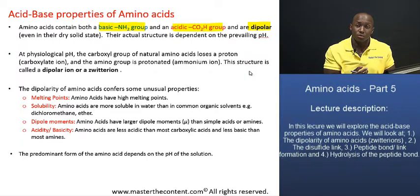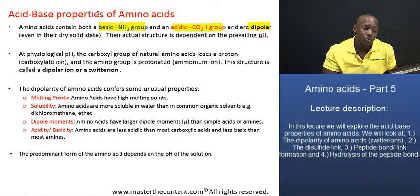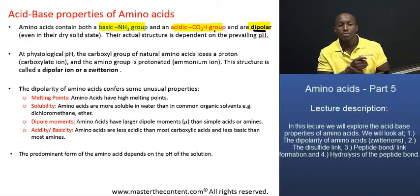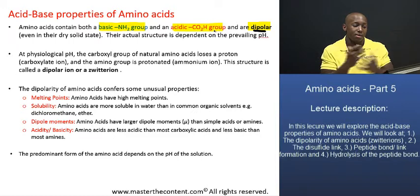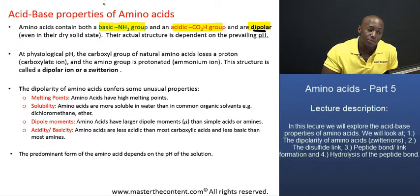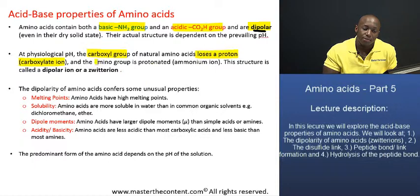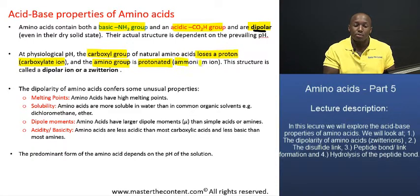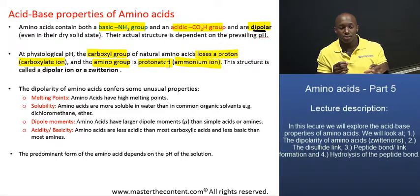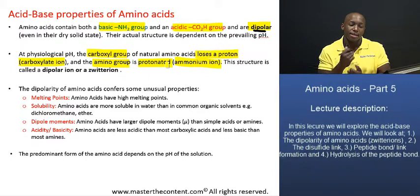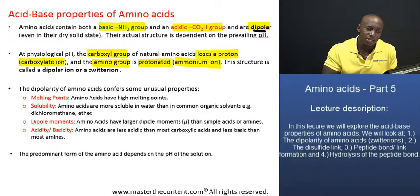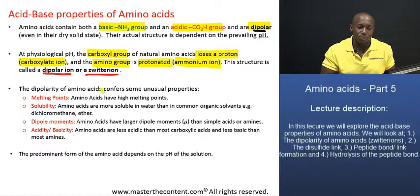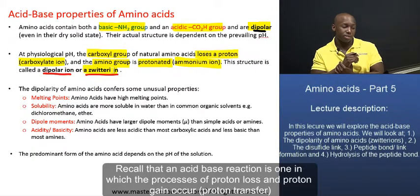At physiological pHs, so at a pH of about 7.0, natural amino acids will exist in this dipolar state. They will tend to exist in a state of having both negative and positive charges. What happens in this case is that the carboxyl group of the amino acid will actually lose a proton to form a carboxylate ion, and the amino group will be actually protonated to form an ammonium ion. So within the same molecule, you have proton loss at the carboxyl group and proton gain at the amino group — a negative charge and a positive charge within the same structure. This is a very unique structure referred to as a dipolar ion, or more accurately, a zwitterion — that's actually from a German word.